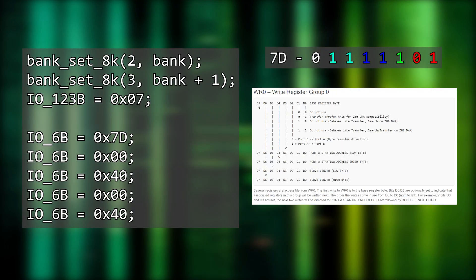Here's my code for DMA copying screen data to the layer 2 screen. First I load the layer 2 screen into banks of memory, banking in 16k of image data into MMU 2 and 3, which covers the top third of the screen. Then I start programming the DMA controller. Hex 7D in binary is 0111 1101, which means we want transfer mode, writing from port A to port B, setting port A's low and high bytes and also the block length. Writing 00 then 40 hex sets port A's address to 0x4000, which is bank 2 on the memory map. Writing 00 and 40 again sets the transfer length to 0x4000, which is 16k. That's WR0 configured — we've written to it three times.